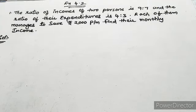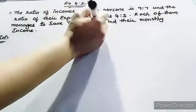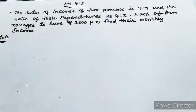9 is to 7 and the ratio of their expenditures is 4 is to 3. Each of them manages to save 2000 rupees per month. Find their monthly income.